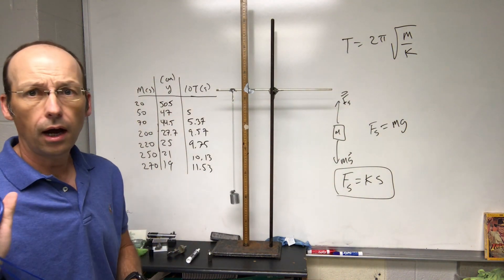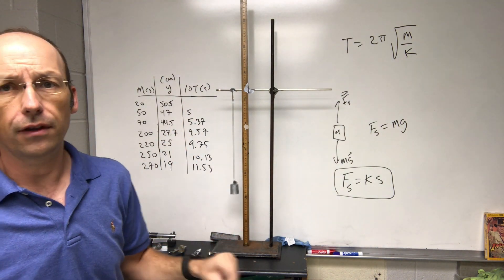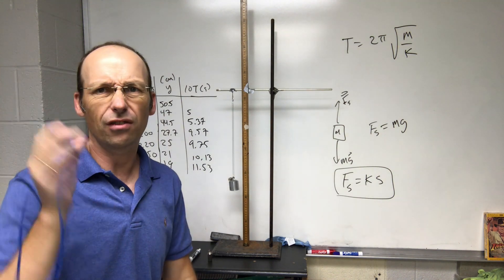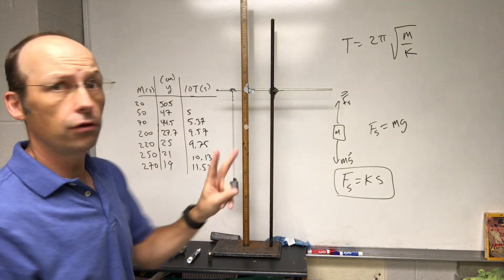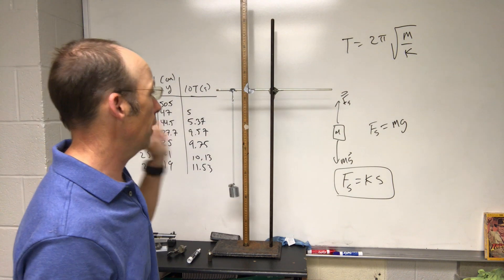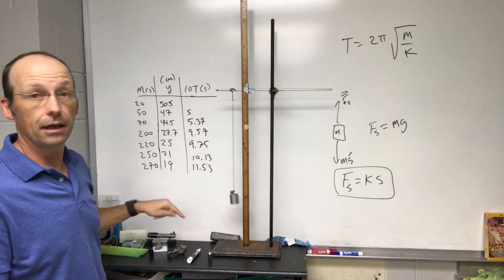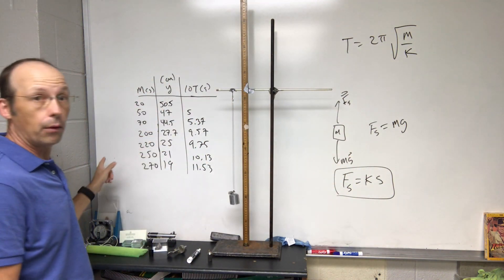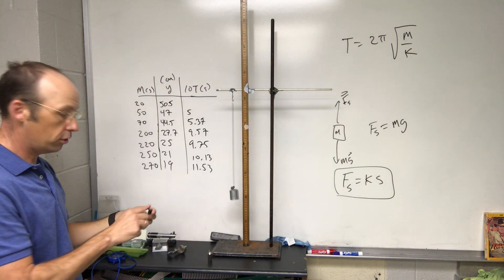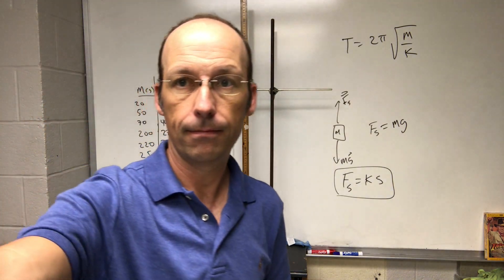I could do this a lot better — I could actually do a video analysis or use some other better methods — but this is just really quick and simple. Now I'm going to make two graphs: the first graph to find the spring constant from the force-stretch data, and the second from the oscillation data. You might want to write down that data and do it yourself.